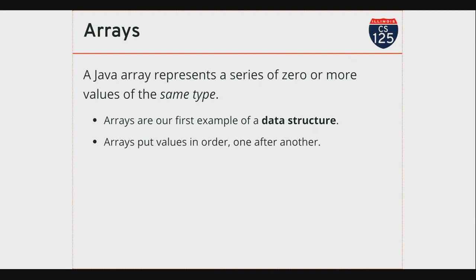What does an array do to data? Imagine I have a deck of cards sitting here all jumbled up, and I put the cards into some order. I've created an array of those cards. The data is the cards; the array has put them in order. So now there's an additional piece of data — sometimes we call this metadata, data about data — that I've added. Not only do I still have the cards, but now each card has a place in my ordering. It has a position. Arrays put values in order, and ordered data is really important.